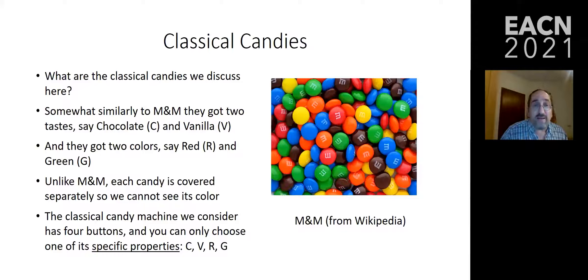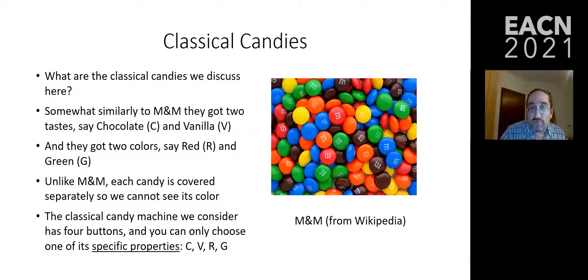So what are classical candies? The classical candies we discuss here are a bit special — quite similar to M&Ms, but not totally. They have two tastes, chocolate or vanilla (C or V), and two colors, red or green. But unlike M&Ms, each candy is covered so we cannot see the color. We can choose whether to look or to taste. There is a unique candy machine that generates only four options: you choose a color — red or green — or you choose a taste — chocolate or vanilla.